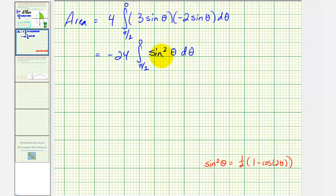And now we'll use a power-reducing formula for sine squared theta, given here below in red. So let's go ahead and factor out the one-half. That would give us negative 24 divided by two times integral from pi over two to zero of one minus cosine two theta, d theta.